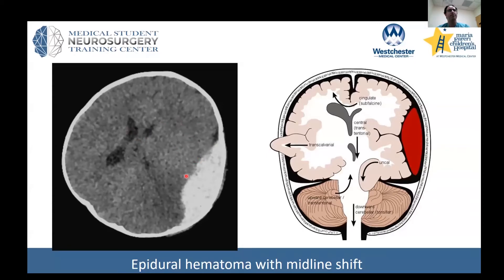We see evidence of mass effect here and also evidence of midline shift. If we drew a line in the middle of the skull, we'd see that the structures are pushed away from the pathology. Mass effect and midline shift are terms you'll hear radiologists use very frequently.